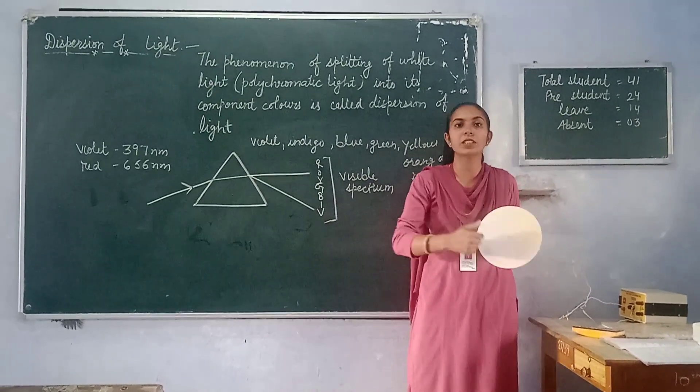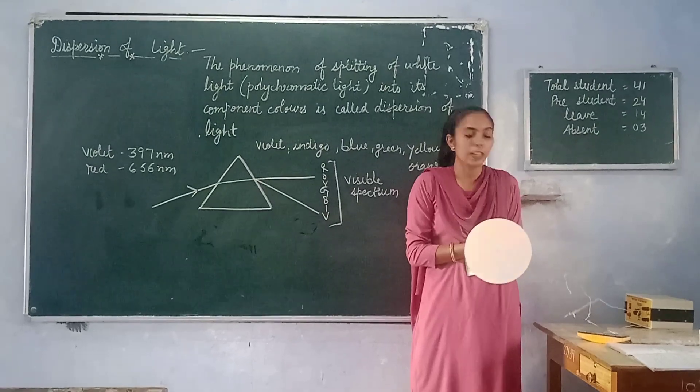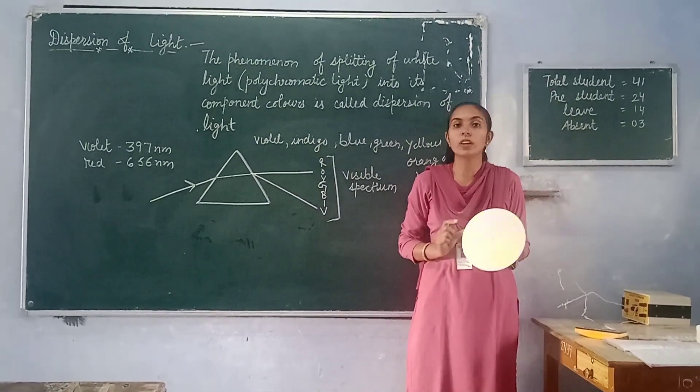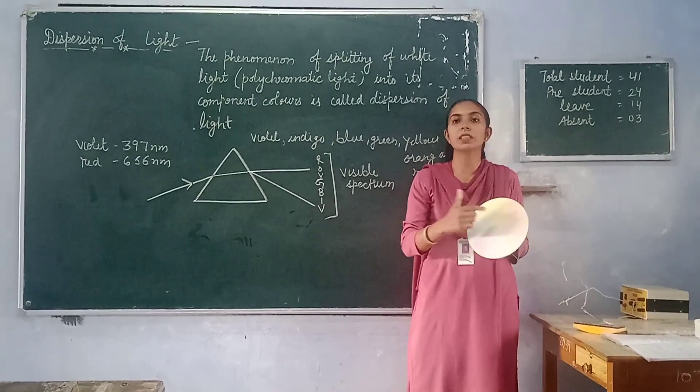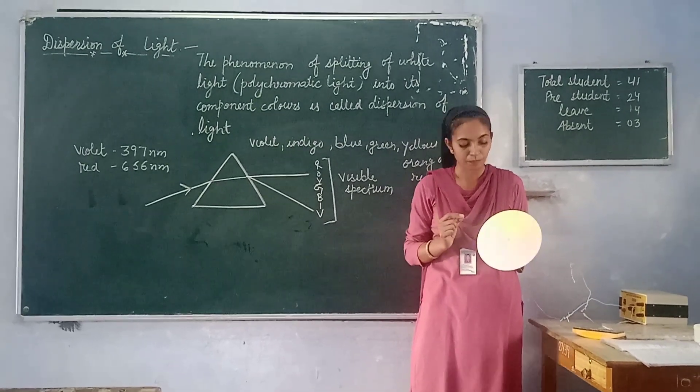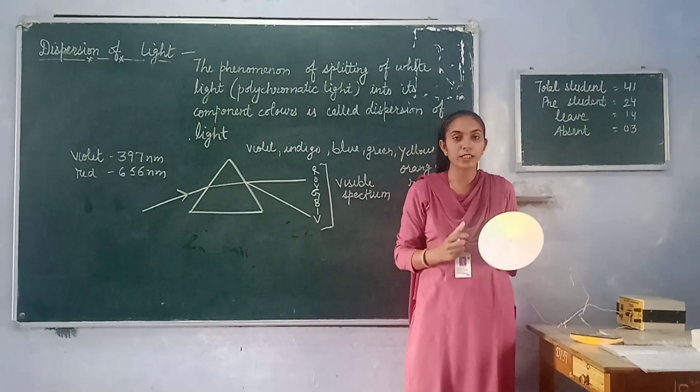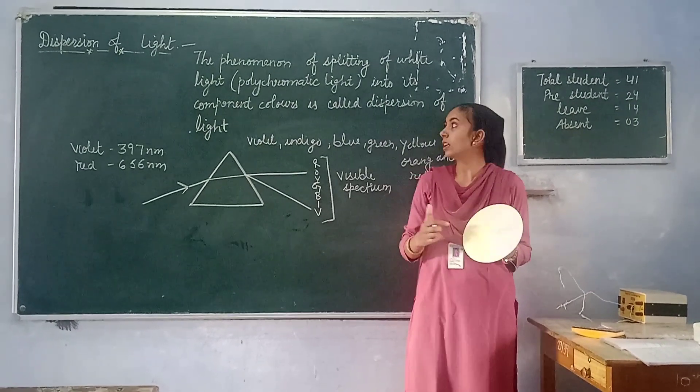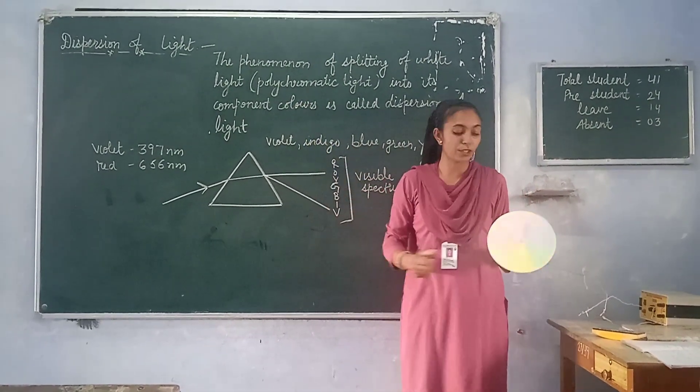As you can observe, these seven colors just disappear to form white color. This Newton disc is also called disappearing disc because it just disappears the seven colors present in white light, which are painted separately, and can be put together into white light. So this spectrum of seven colors is called dispersion and this phenomenon is basically called dispersion.